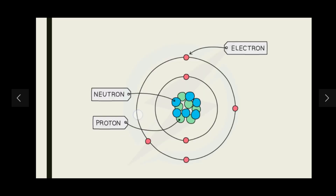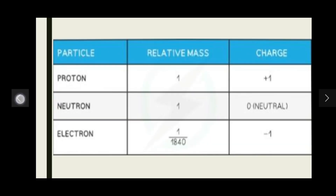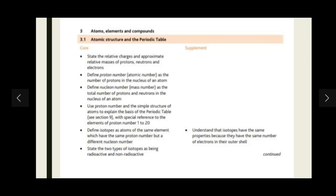We have now covered the goals for today's video: the subatomic particles (protons, neutrons, electrons) with their relative masses and charges, the proton number, and the mass number. In the next video, we will discuss how to use the proton number to explain the basis of the periodic table for elements with proton numbers 1 to 20, define isotopes as atoms of the same element with the same proton number but different nuclear number, and cover radioactive and non-radioactive isotopes.